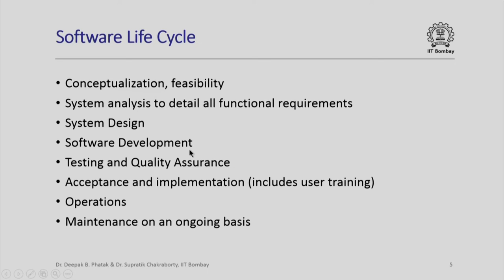Once software development is completed, the software has to be tested and you have to do what is known as quality assurance. Testing and quality assurance ensures that there are no mistakes, or what is popularly known as bugs, in your software, because a buggy program will behave significantly badly when deployed in an actual practical environment. The testing and quality assurance is done by the team that develops the software, but additionally the user will insist on carrying out his or her own acceptance test.